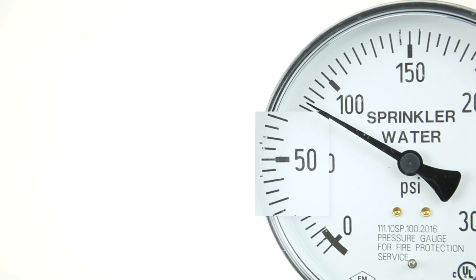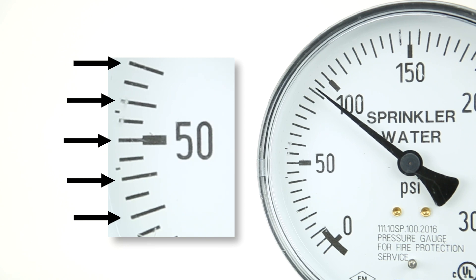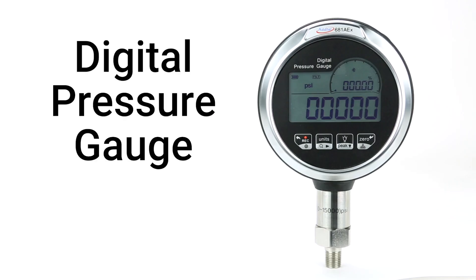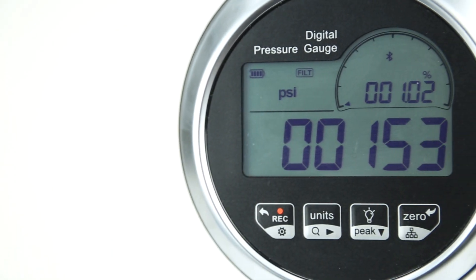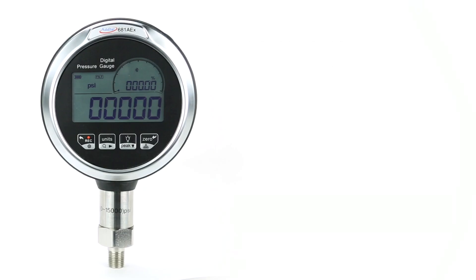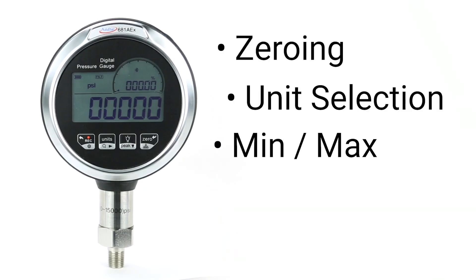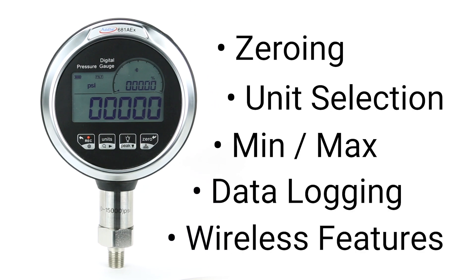Since the accuracy of a dial gauge can only be as high as the number of graduations between the values, a digital pressure gauge is used when more accurate readings are required. Digital gauges function the same as dial gauges, but often have extra functions enabled by their electronics, such as the ability to zero the gauge, change units, find the minimum and maximum pressure values, record pressure over time, and even communicate with other devices.